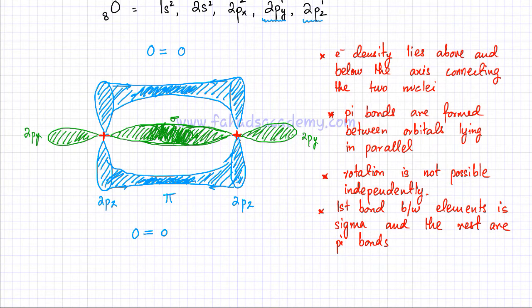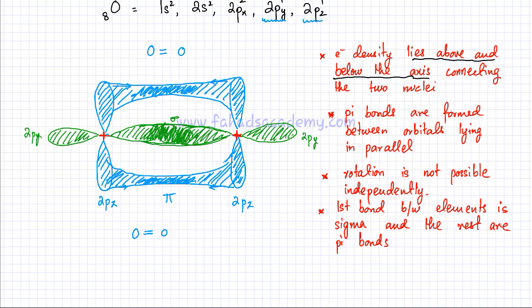Now that you've developed some understanding of what a pi bond is, I'm going to briefly outline some properties of pi bonds. The first one is that the electron density lies above and below the axis, which means the electron density would not be in the middle of the two nuclei — it would be either above or below the axis connecting the two nuclei, because the middle is already occupied by a sigma bond. The second is that pi bonds are formed between orbitals which are lying in parallel, because if the orbitals were lying end-to-end, they would most likely form a sigma bond. As you can see, the two 2pz orbitals — the blue ones — were lying in parallel, which is why they ended up forming a pi bond.